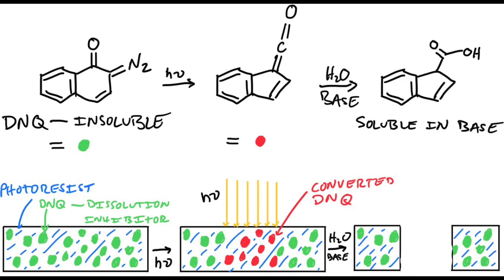So as light comes in and strikes these little dissolution inhibitor molecules and makes them soluble, you can then etch out that center portion of the image, the exposed portion of the image, with aqueous base. Usually that's tetramethyl ammonium hydroxide, TMAH, and that is a nice base to use for that type of process.